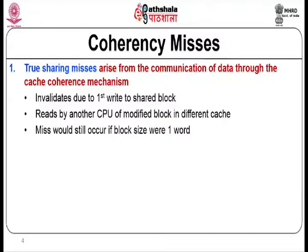Before getting into the directory-based approach, we will spend a few minutes on what is called a coherence miss. We discussed the 3C model for cache optimizations — capacity misses, conflict misses, and cold start or compulsory misses. In a multiprocessor scenario with cache coherence, a fourth miss arises called a coherence miss.